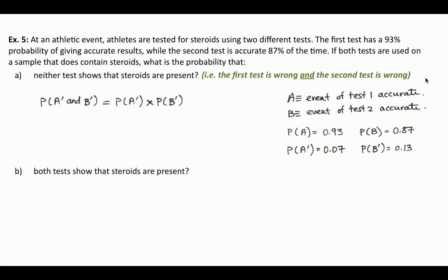Using our formula for independent events: P(A' and B') = P(A') × P(B') = 0.07 × 0.13, which gives a very small number — less than 1%, specifically 0.91%. So if an athlete is using steroids and is tested with two tests having these probabilities, there's less than a 1% chance they'll get away with it. Most of the time these are generous estimations — test accuracy is typically up in the 90–95% range.